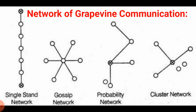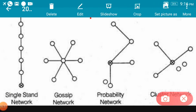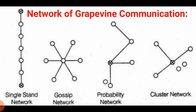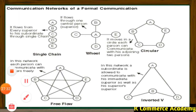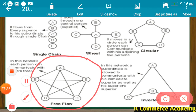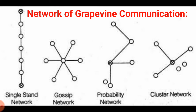Now, the networks of grapevine communication — grapevine communication means informal communication. There are 4 kinds of networks in informal communication. The first is the single strand — similar to the single chain in formal communication. The second is the gossip network — similar to the free flow pattern in formal communication, where one person communicates information to many others freely.